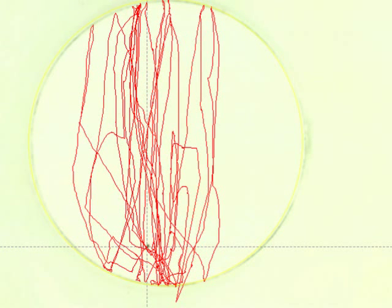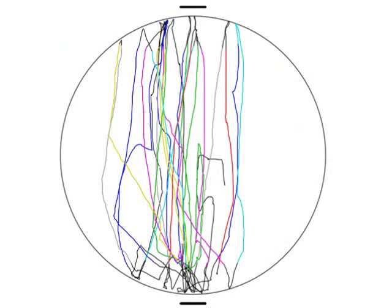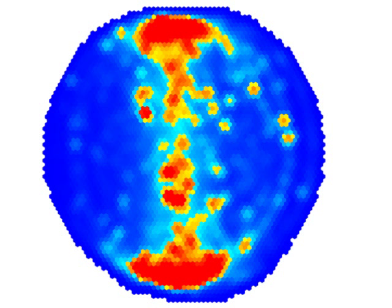Here's the path the fly took in this 5 minute experiment we just saw in time-lapse. Our software can now count the number of times this particular fly walked between the stripes, or average many such traces and calculate occupancy plots.